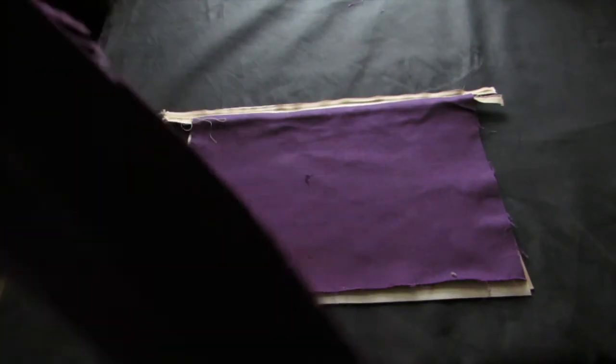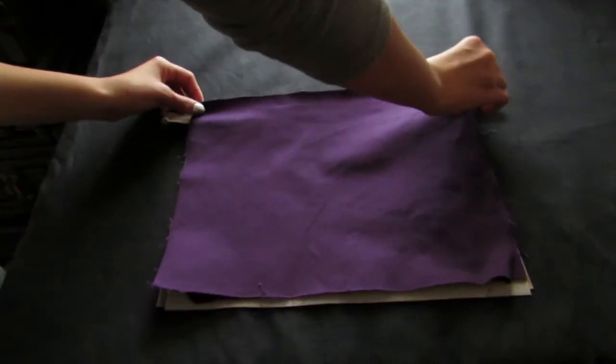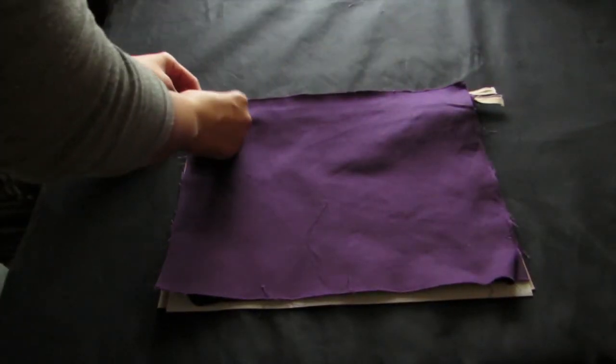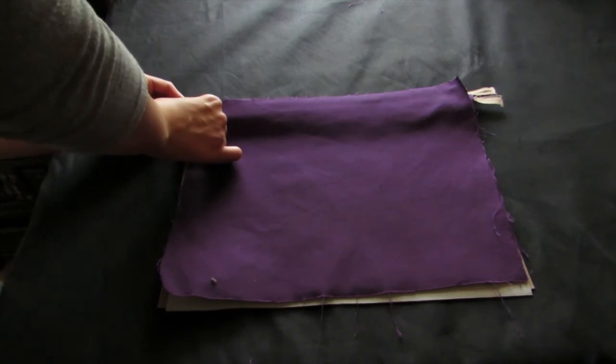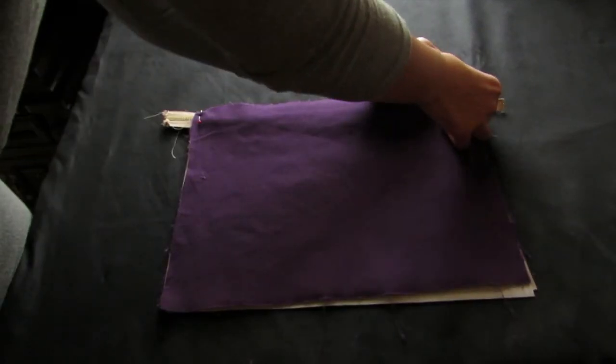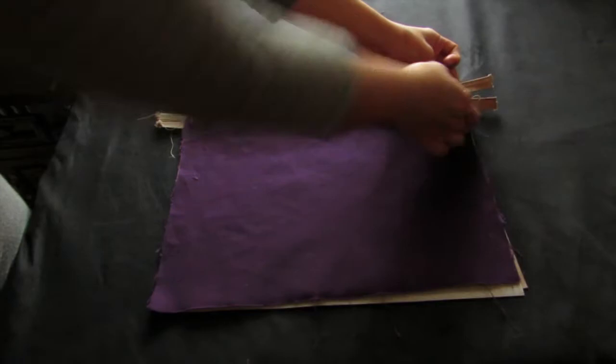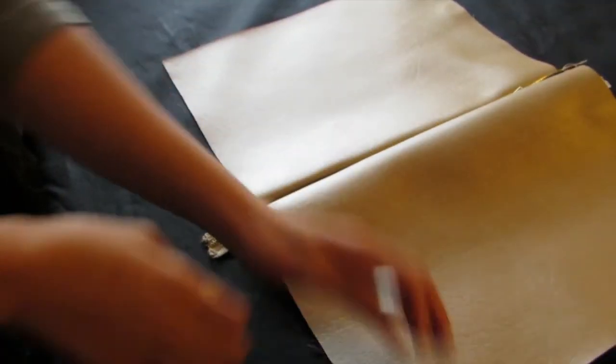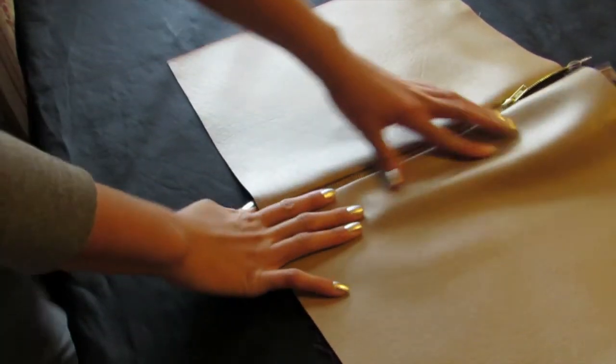Now it's time for your last piece of lining. Align that with the bottom half of the zipper and then sew across. Now you should see the zipper exposed on both sides.